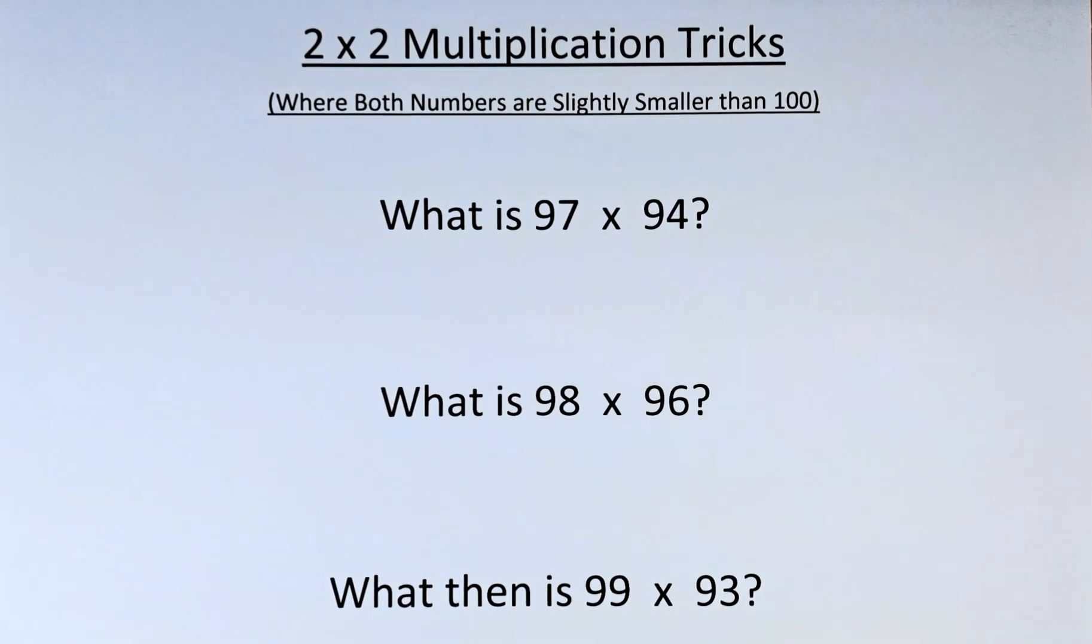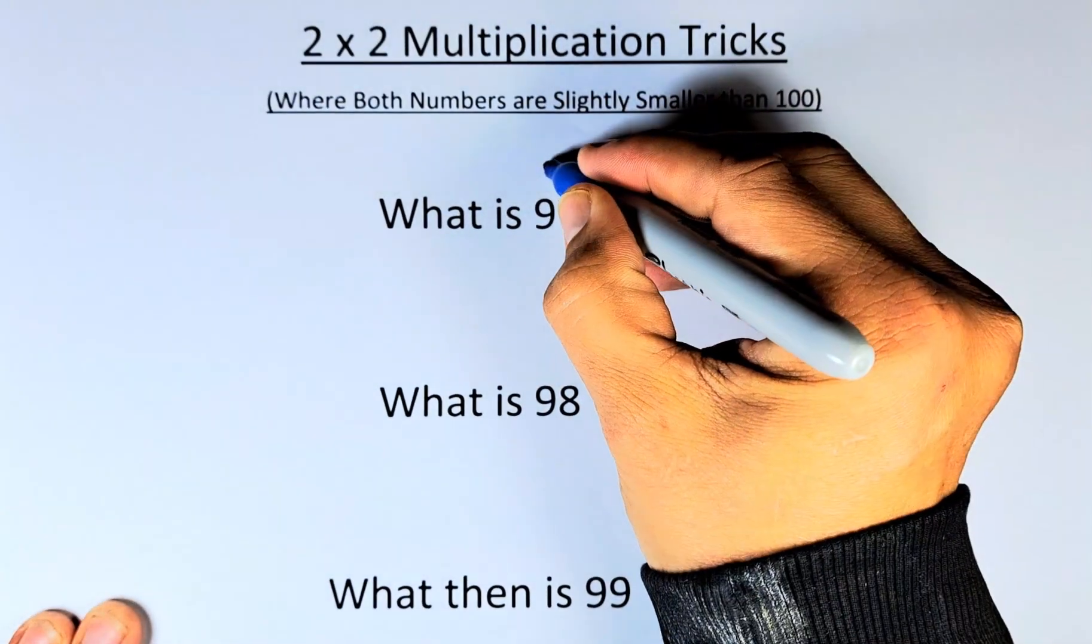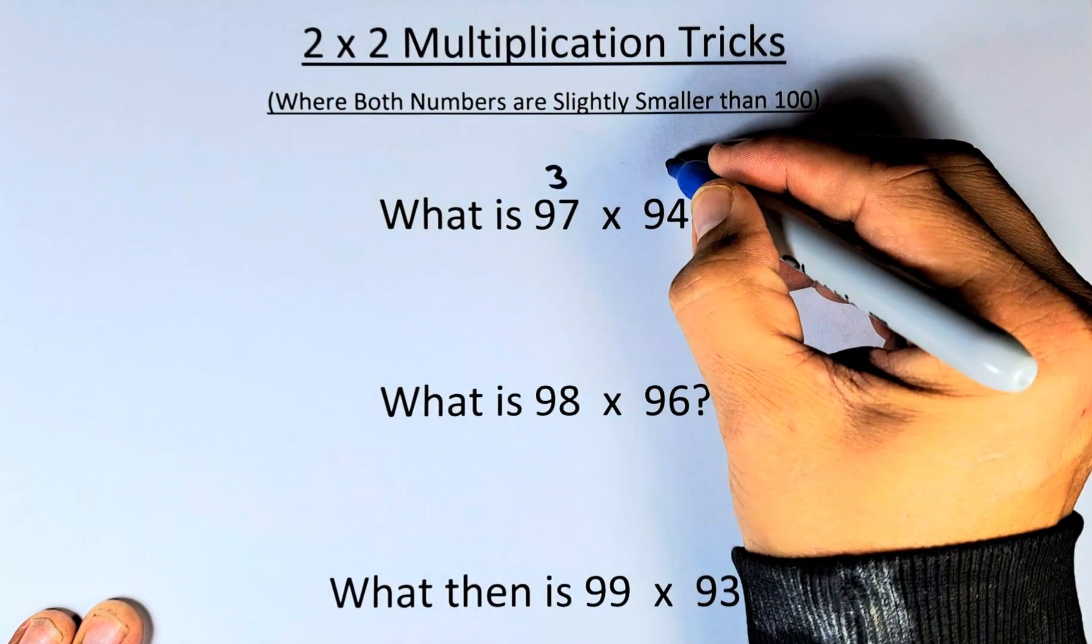So what is 97 times 94? The first thing you do is make it 100. To make 97 into 100, you add 3. And for 94, to make it 100, you add 6.